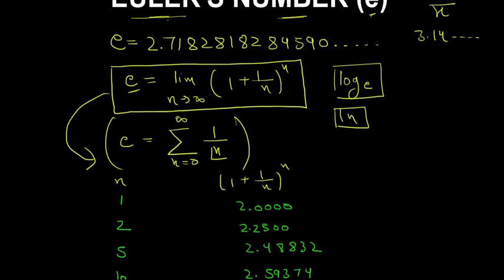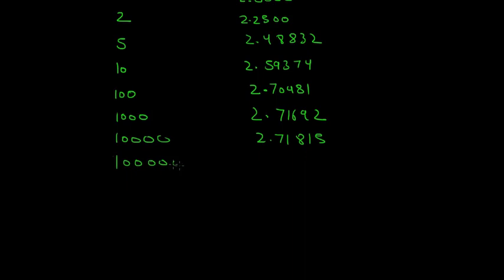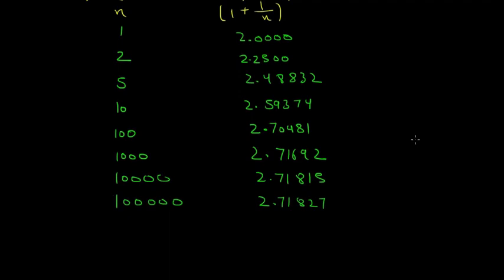Now let's put a bigger n, which is 100,000. Then its value is 2.71827, which is even closer to e. Similarly, if you put larger and larger n, these values become closer to e.